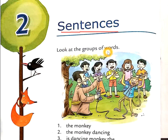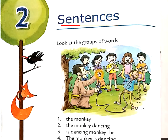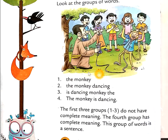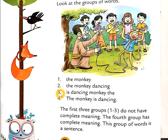Look at the groups of words. Hameh groups of words dekhne hain. Number 1: the monkey. Number 2: the monkey dancing. Number 3: is dancing monkey the. Number 4: the monkey is dancing.